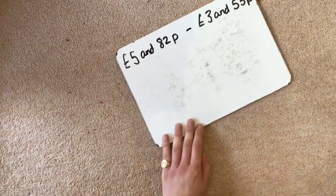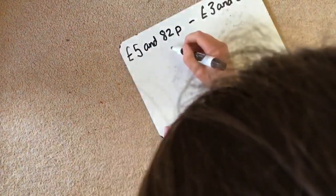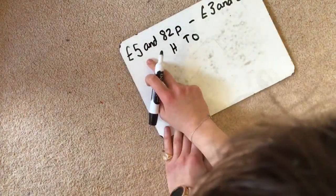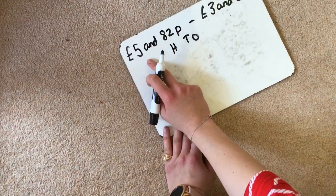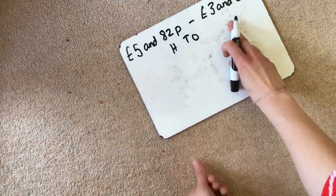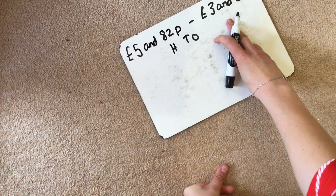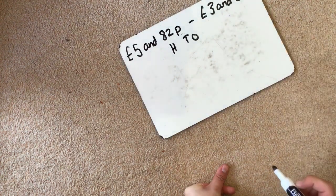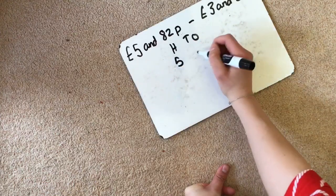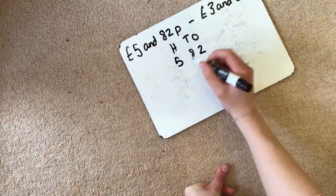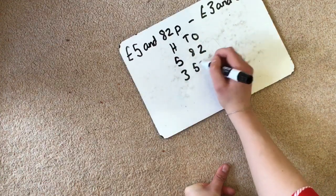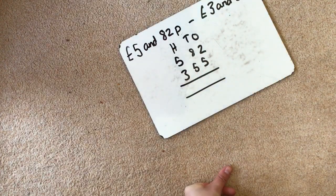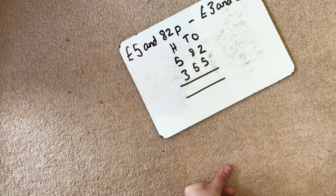So let's make sure that doesn't happen today. So we're going to set it out like we always do with our hundreds, tens and ones. Remembering that £5.82 is the same as 582p. And £3.55 is the same as 355p. So we are not adding, remember we are taking away. So we're not going to add these together. We are still going to start with our ones.